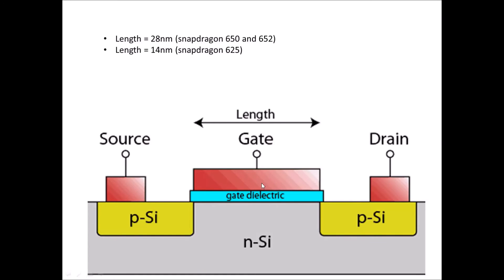Snapdragon 625 is based on 14 nanometer FinFET technology, which means that its gate length is 14 nanometers, whereas the gate length of 650 and 652 is 28 nanometers.